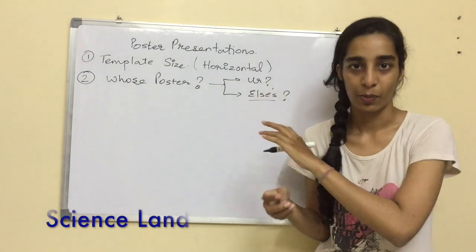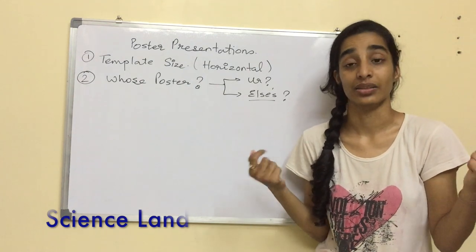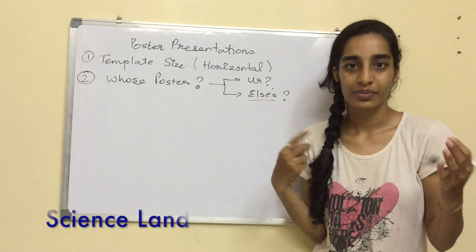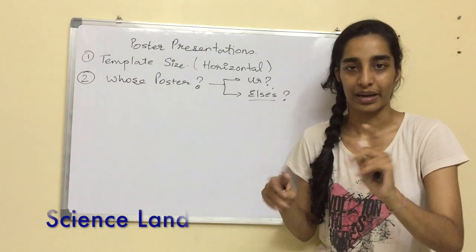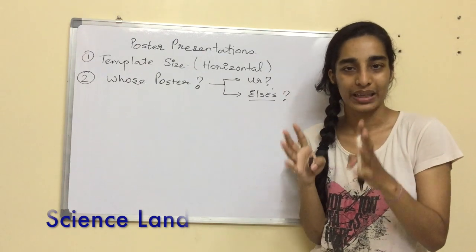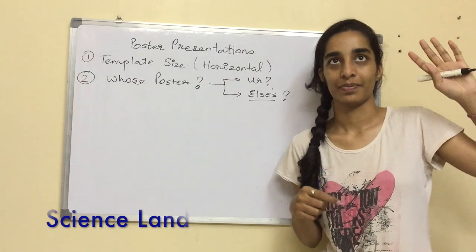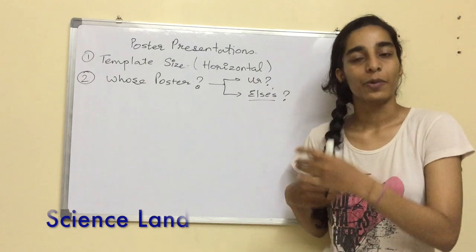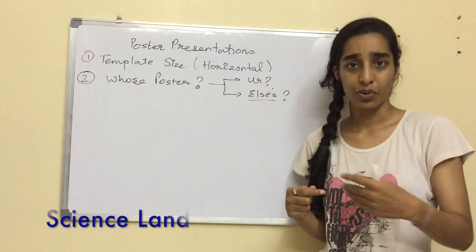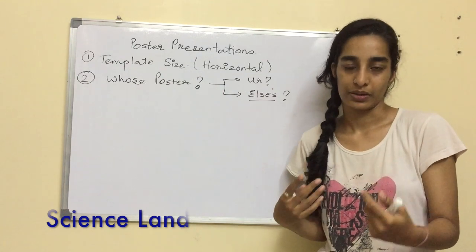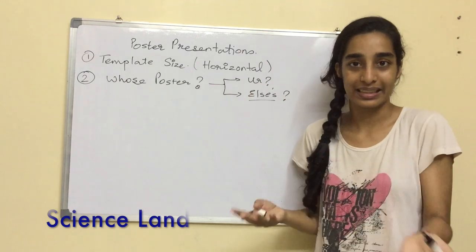But if it is somebody else's, you need to go to sites—there are a number of sites, NCBI is the common one. Type in whatever topic you want in the title. Select five years because the period needs to be quite recent. You can't select a 1990 paper; it needs to be recent. Read the paper, go through it very well, make points, and jot down points so that accumulating those points is easy.